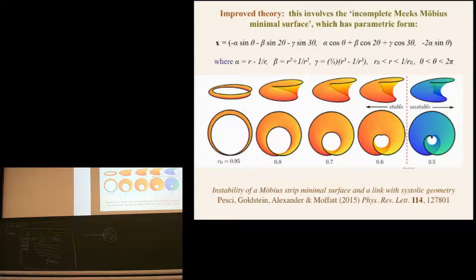The theory I gave you before just wasn't really a theory. It involved ruled surface, which is not a minimal surface. But there is a minimal surface, and it's due to Meeks. The Meeks Möbius minimal surface has this parametric form. α sin θ minus β sin 2θ minus γ sin 3θ. And similar terms for the x component, y component, z component. α is r minus 1 over r. β is r² plus 1 over r². γ is r³ and minus 1 over r³. So that's the parametric representation.